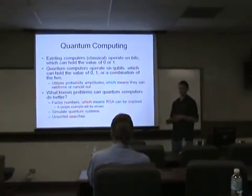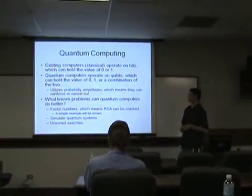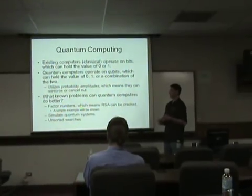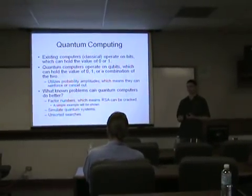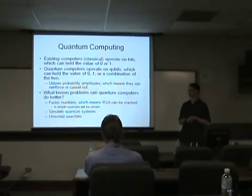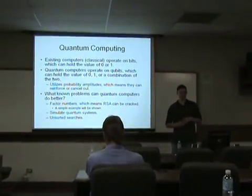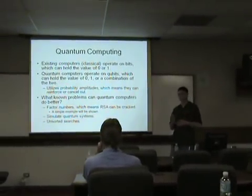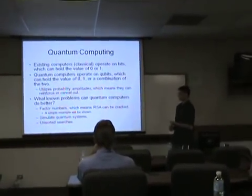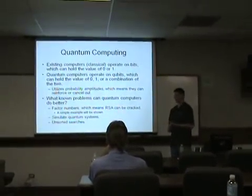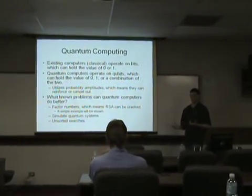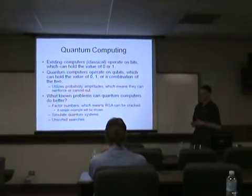The quantum computer operates on qubits or quantum bits. And what a qubit can be is it can be zero, one, just like a classical computer, or a combination of the two. So you could have a qubit that is, say, 80% zero and 20% one. And those odds are realized by what they call probability amplitudes, which means you can have certain probabilities reinforce each other and others cancel out. And what can quantum computers do better? Factoring numbers, like I said, is probably the most famous example. And that means you can crack RSA, which is a pretty big deal. You can simulate quantum systems, probably not too surprisingly. And you can do unsorted searches better.